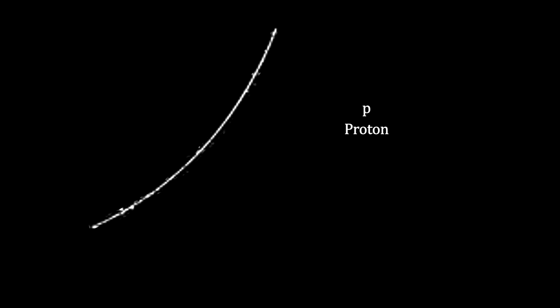The particle's line is also thicker than the others. This indicates that it is a large, slow-moving particle. This is a characteristic of proton tracks.